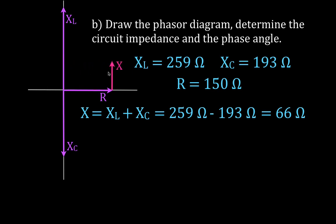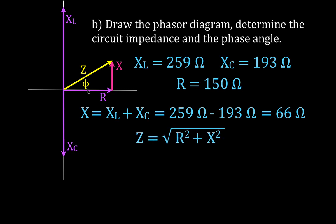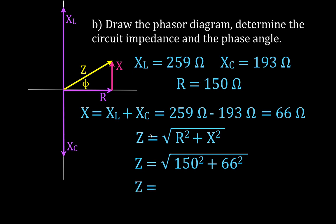Adding the resistance vector and net reactance vector head to tail gives us the impedance Z. Using the Pythagorean theorem — Z equals the square root of R squared plus X squared — we plug in 150 ohms and 66 ohms and get a circuit impedance of 164 ohms.